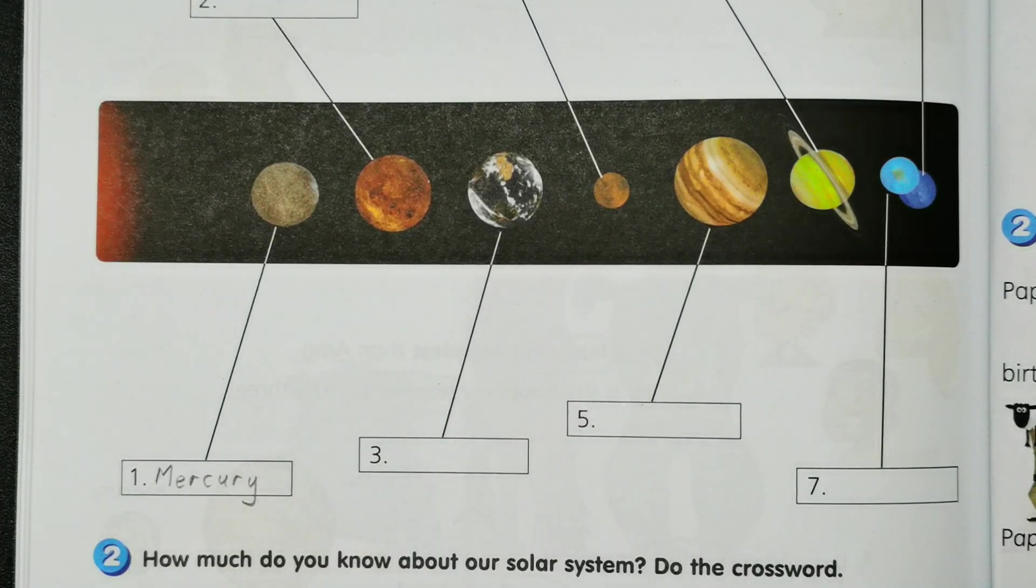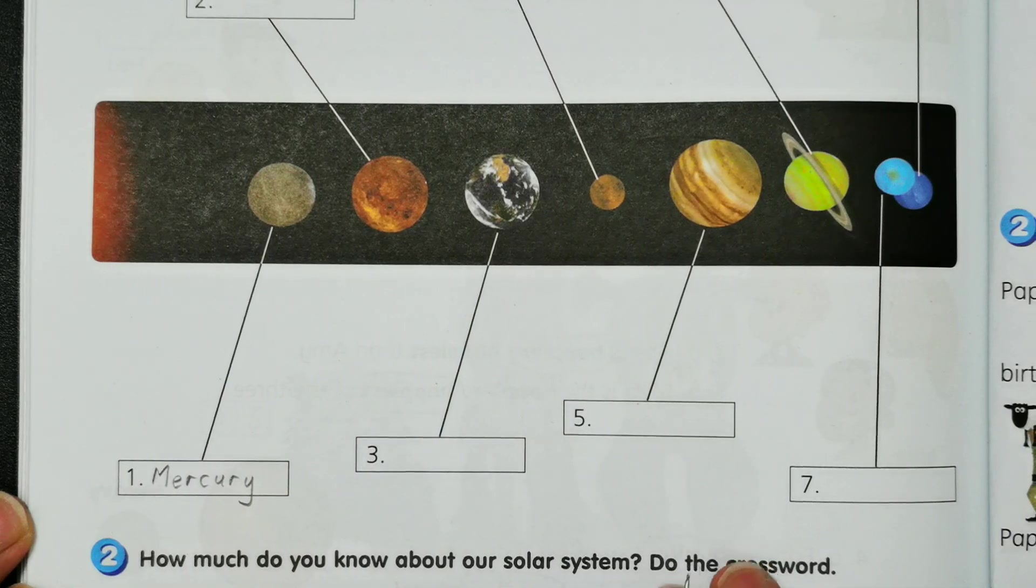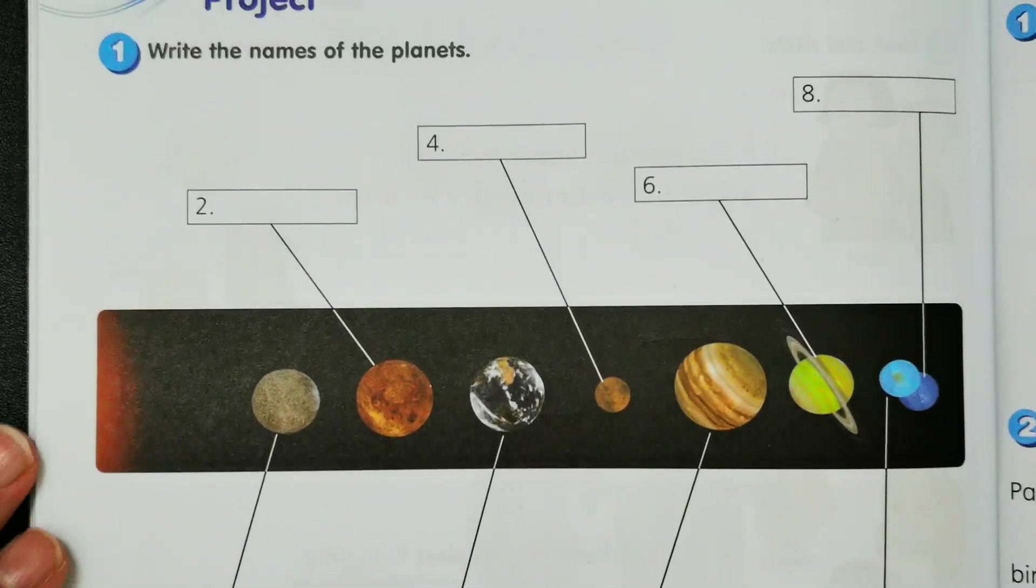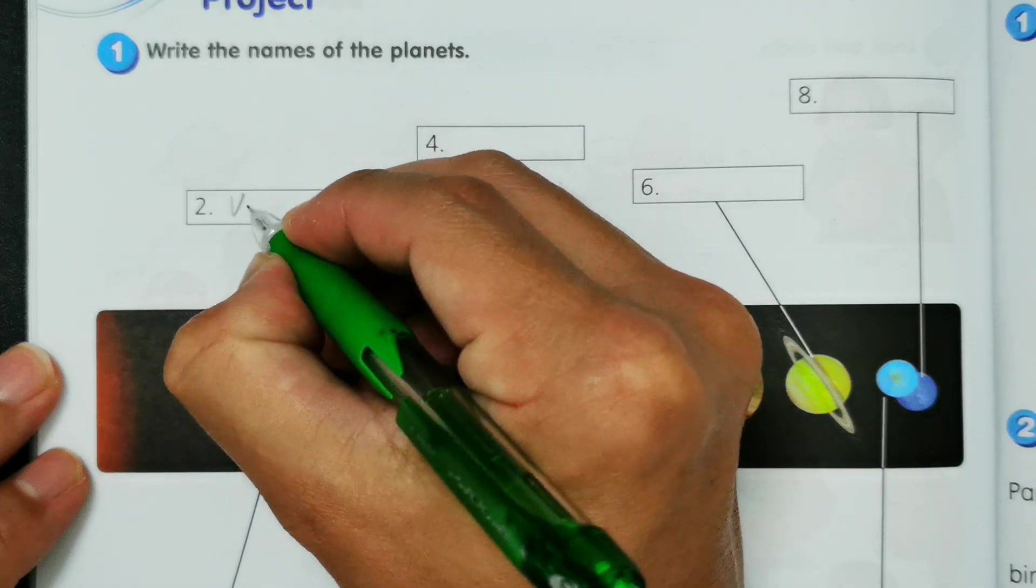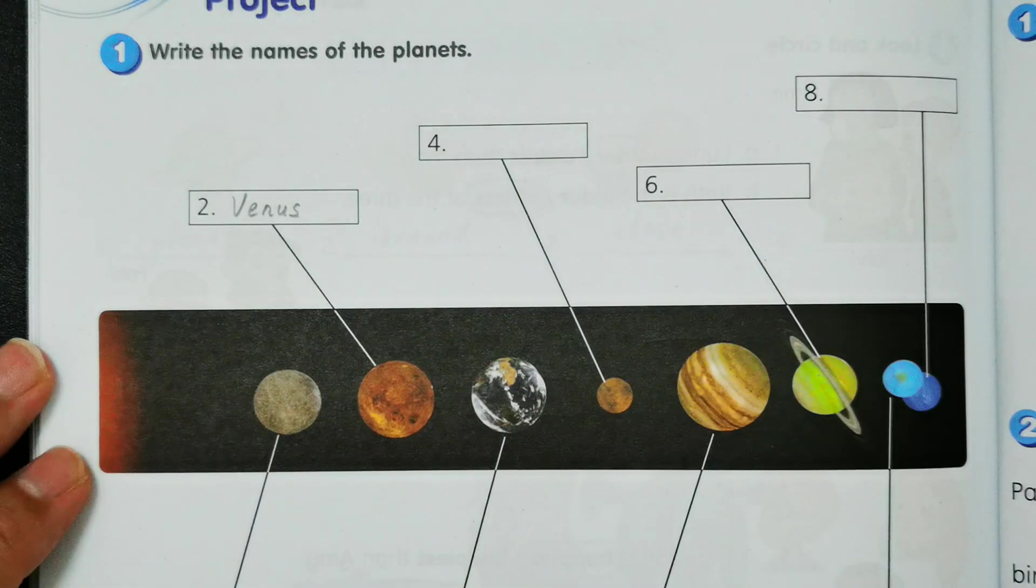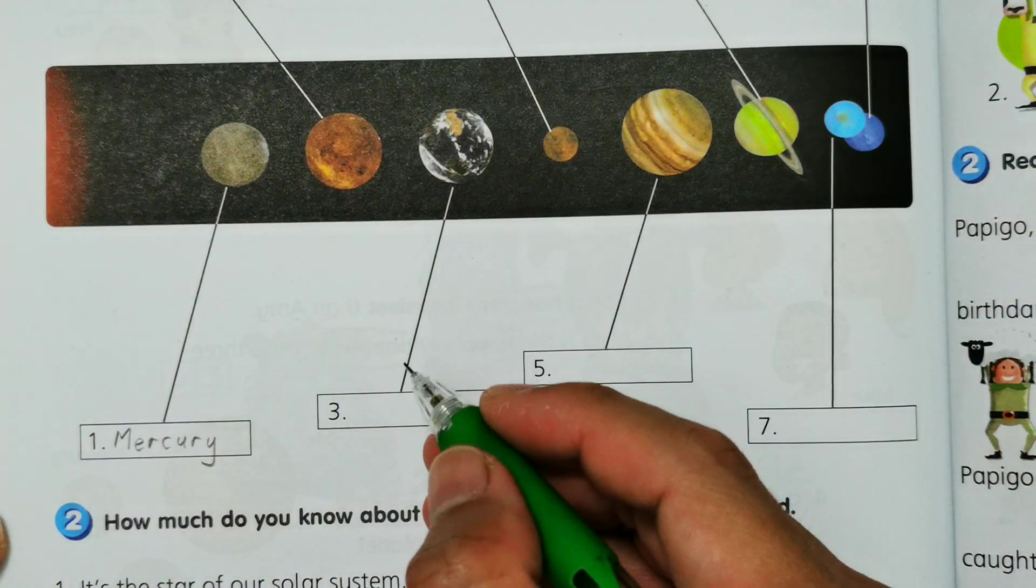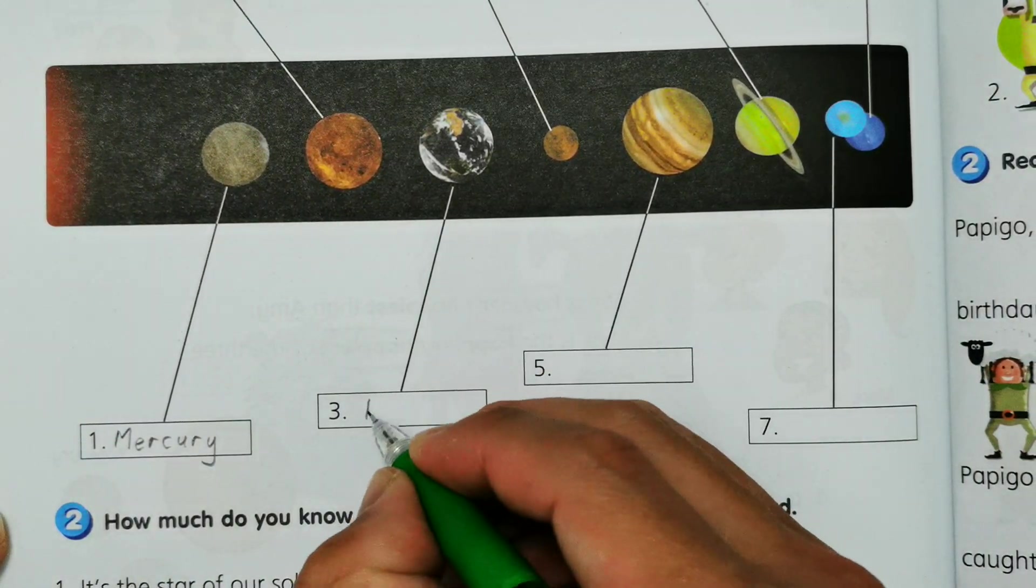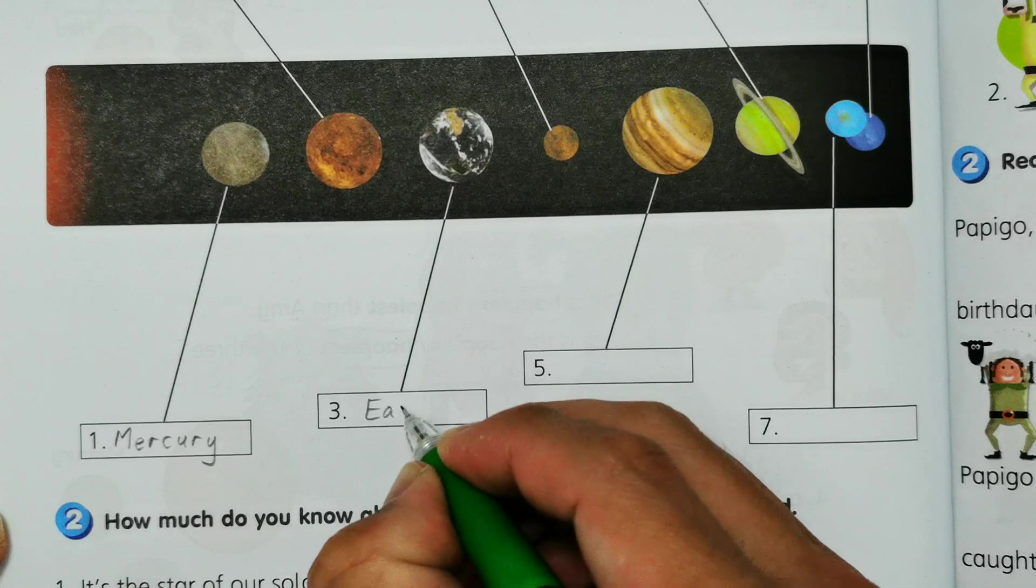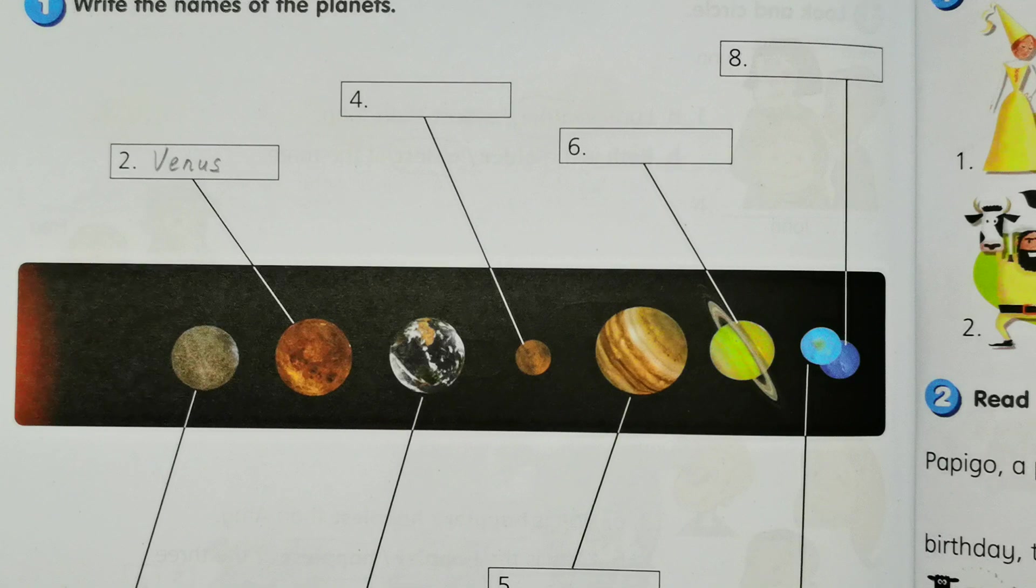And then we have the second planet nearest to the Sun, so we have Venus: V-E-N-U-S, Venus. And then this is our home, we have Earth, so E-A-R-T-H, Earth.